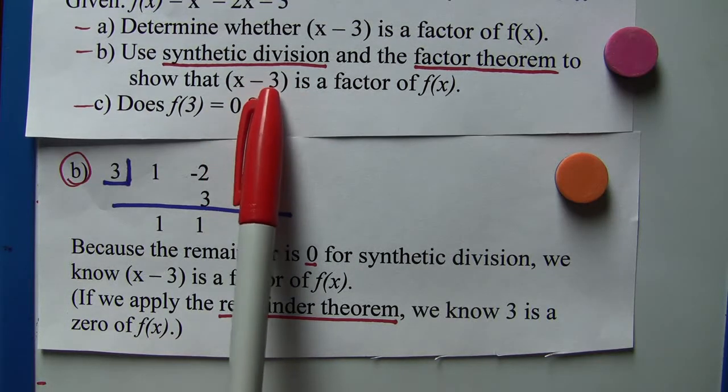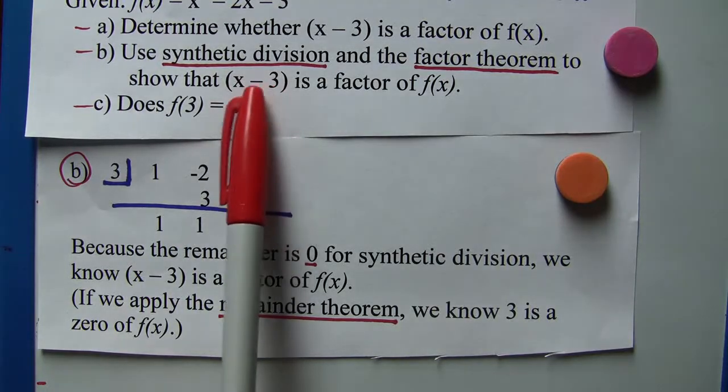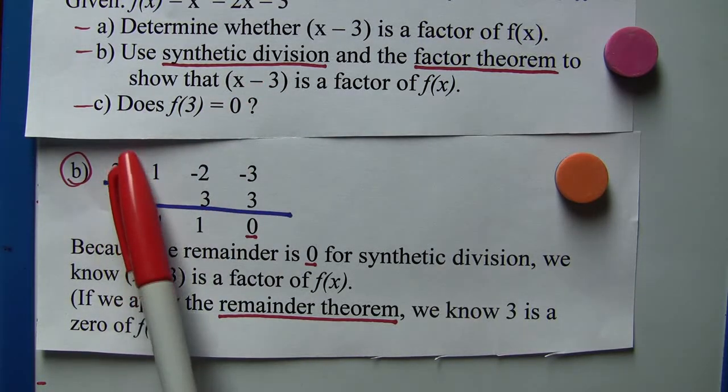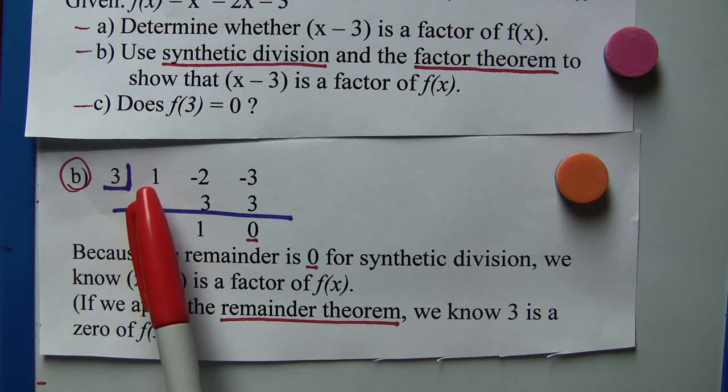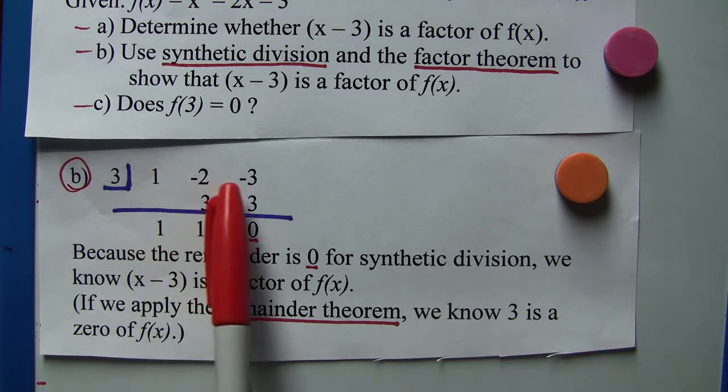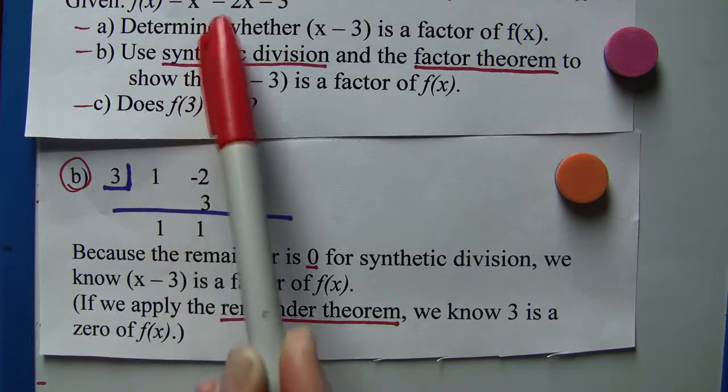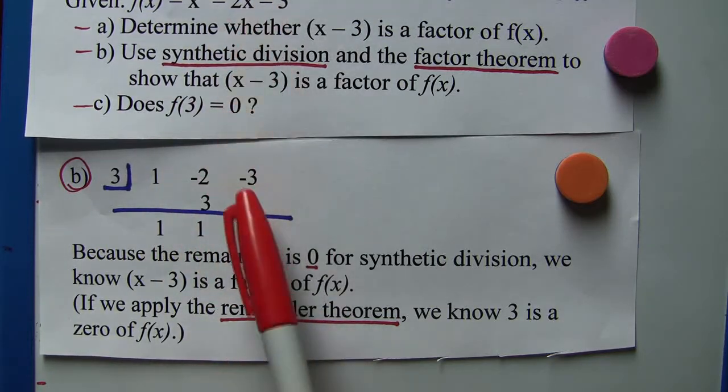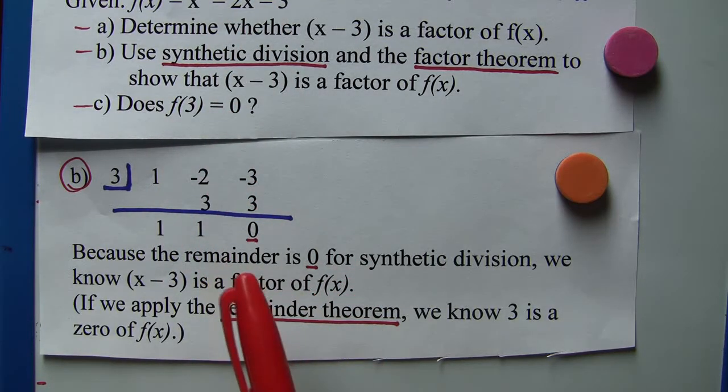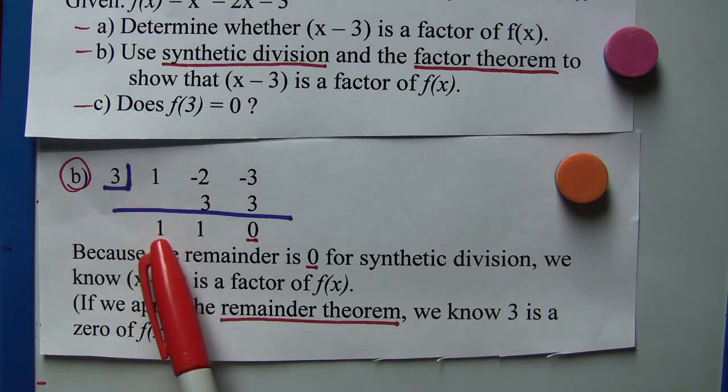For synthetic division, we might look at a possible factor: what makes this 0? The opposite value of this should be positive 3, so we put 3 in our half corner. We bring down the coefficients of the polynomial, which are 1, -2, and -3.